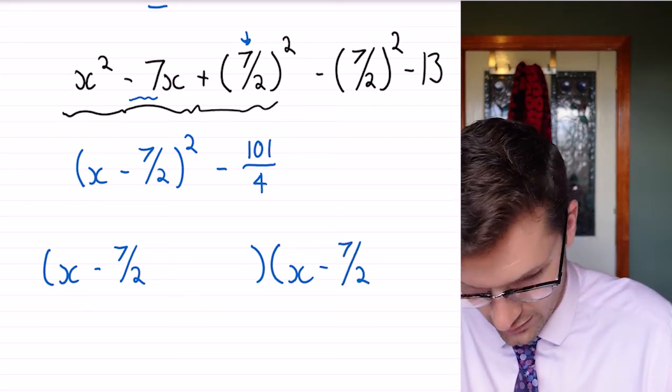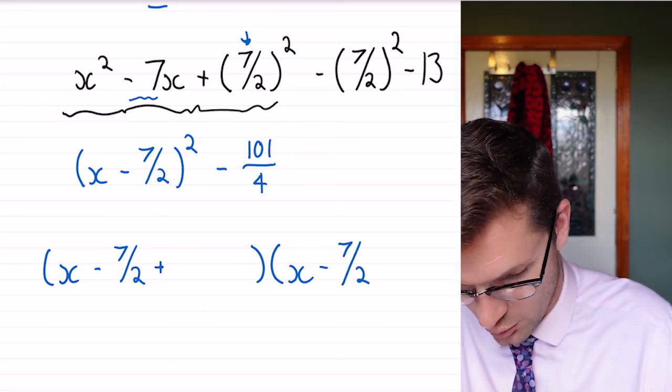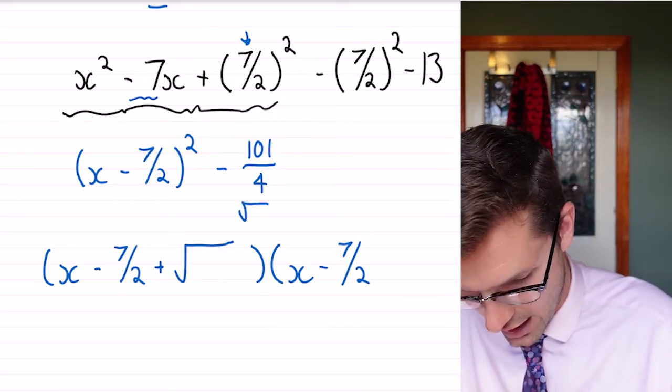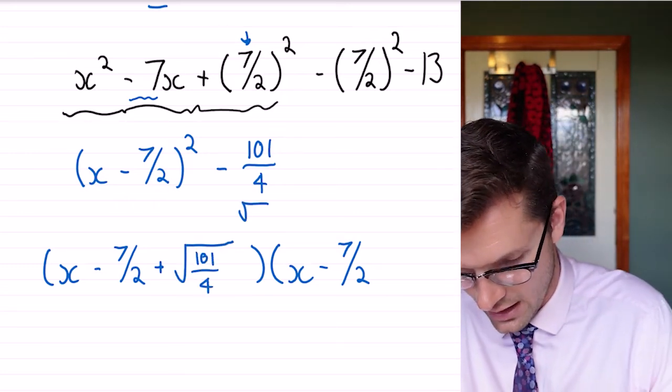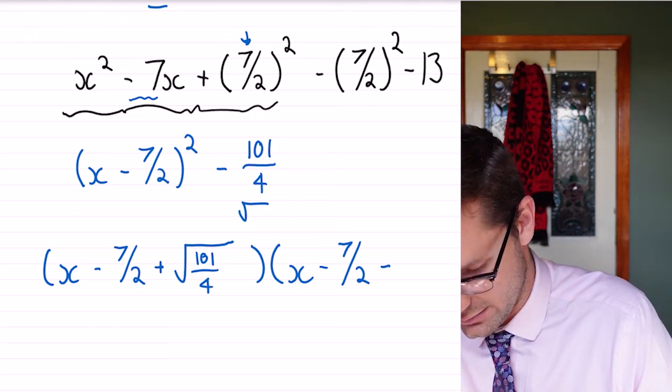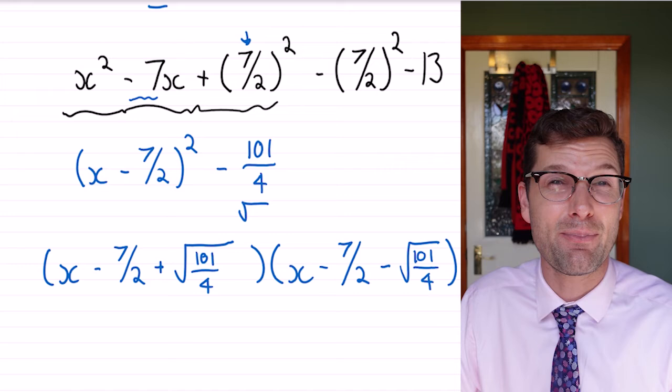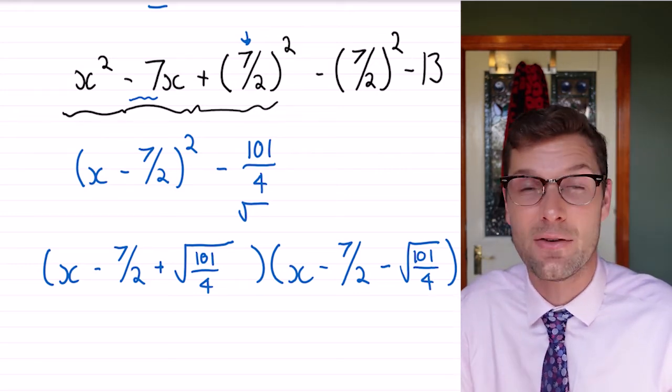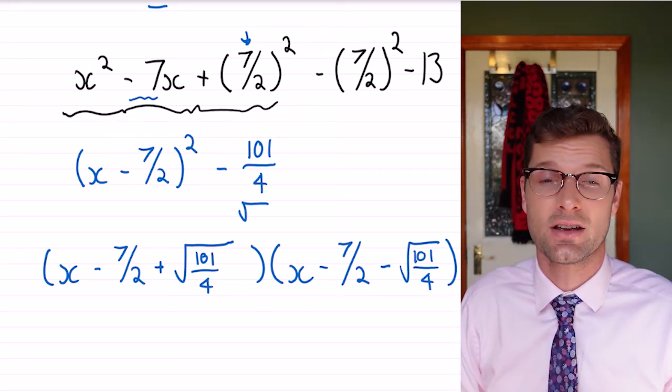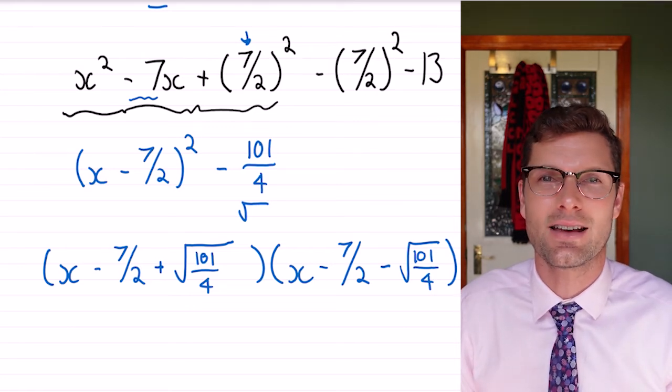Then we have to add on the square root of the last bit, so plus √(101/4), and minus √(101/4). You might be asked to simplify that further if you've been doing quite a bit of work with surds, but if not, that is your final answer.